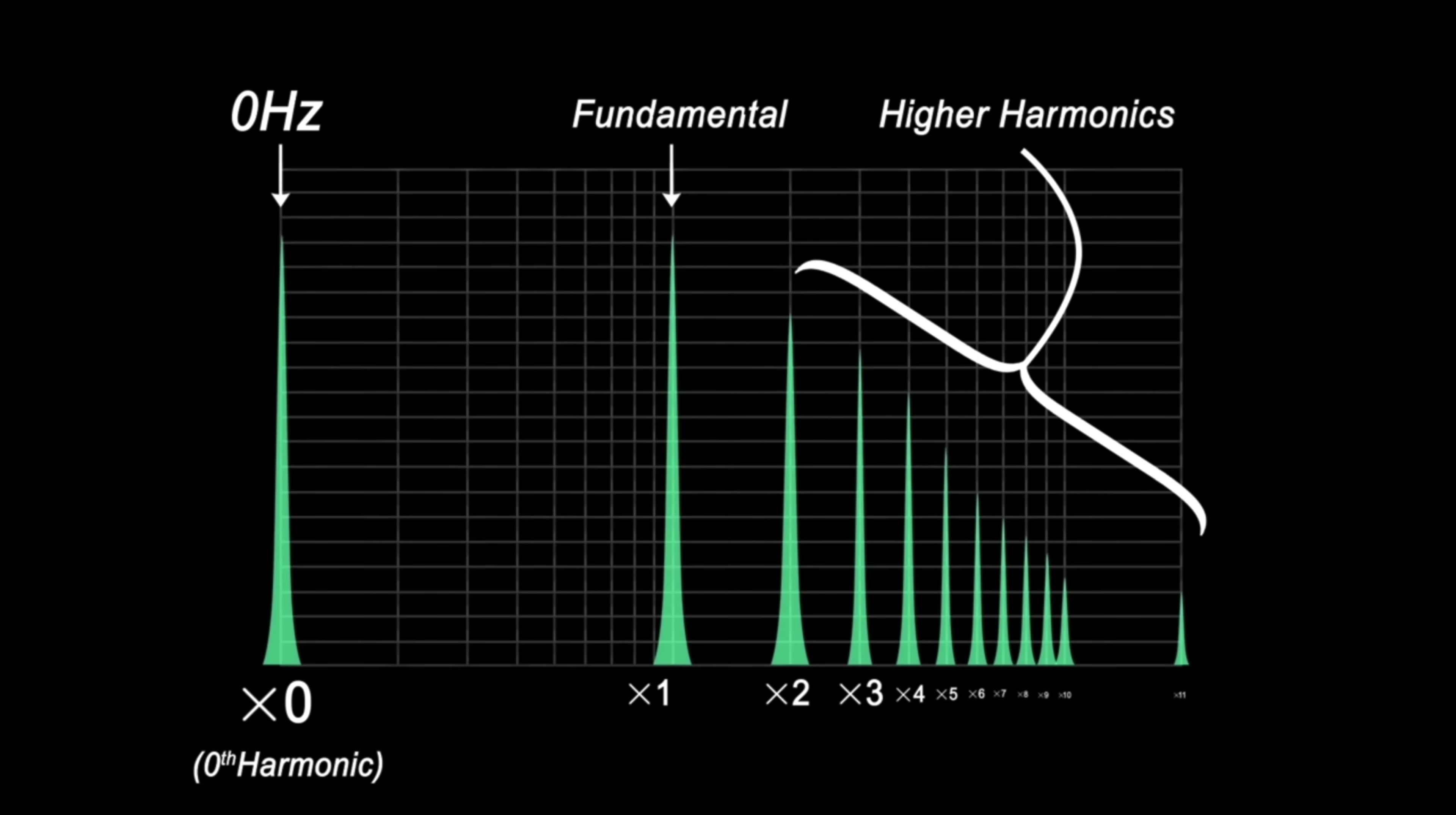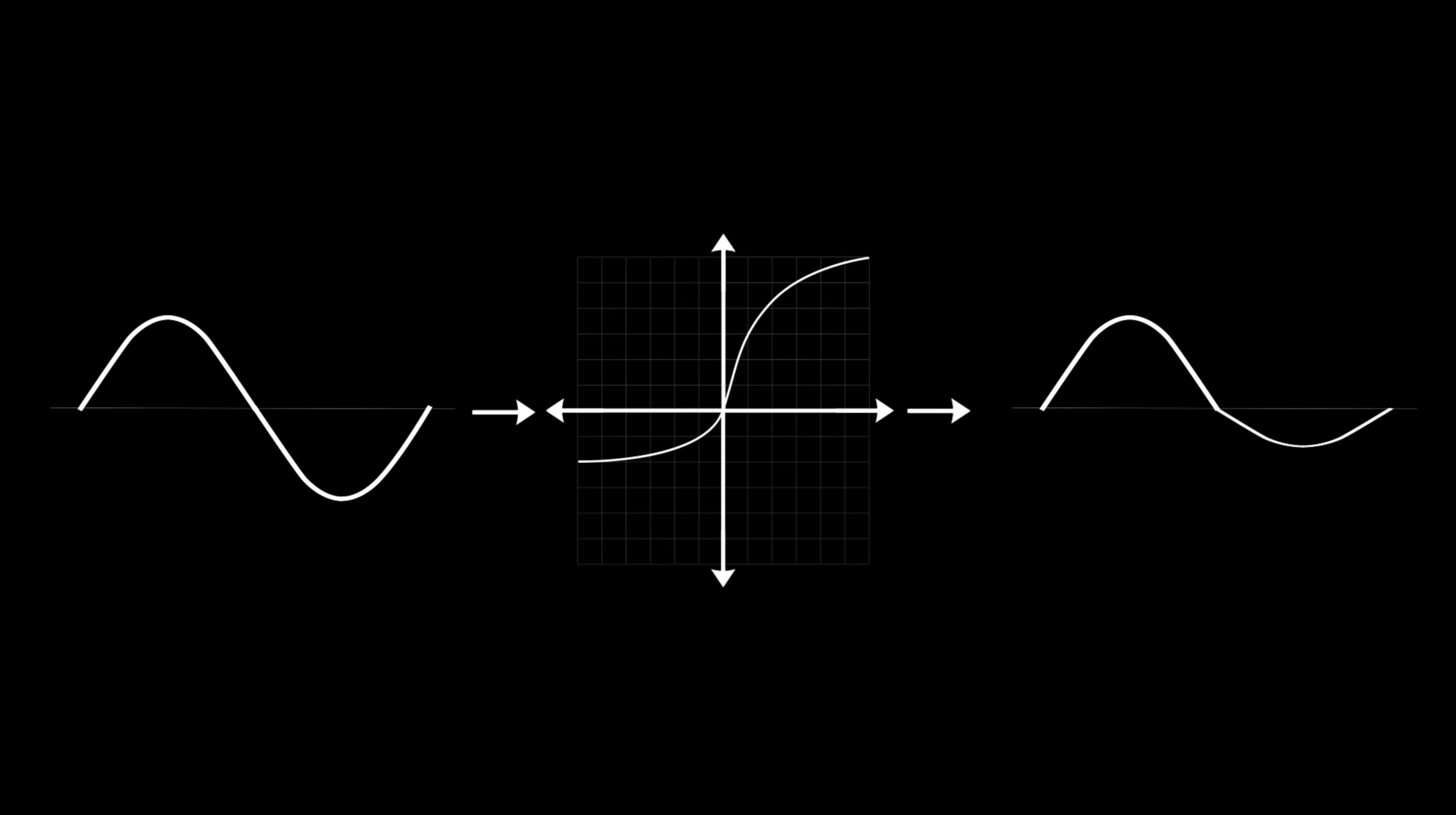Remember from a previous video, a DC offset is the zeroth harmonic, so asymmetric curves can cause a DC offset, which makes sense if you think about it. If a wave is centered at zero, an asymmetric curve shapes the bottom and top differently, making the average level different from zero, which is a DC offset.